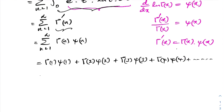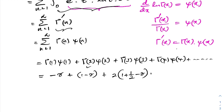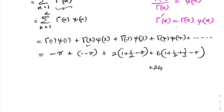Using known values — proved in a previous video (link in description): Γ(1)=1, ψ(1)=-γ; Γ(2)=1, ψ(2)=1-γ; Γ(3)=2, ψ(3)=1+1/2-γ; Γ(4)=6, ψ(4)=1+1/2+1/3-γ; Γ(5)=24, ψ(5)=1+1/2+1/3+1/4-γ; and so on.